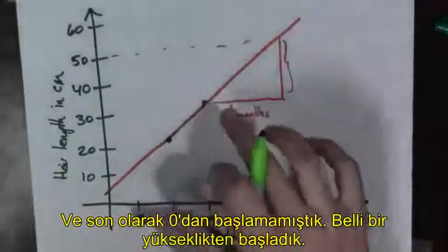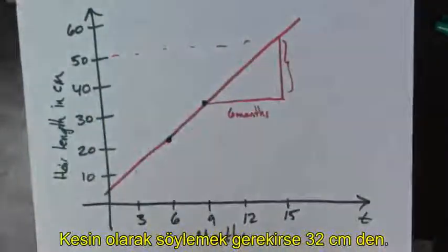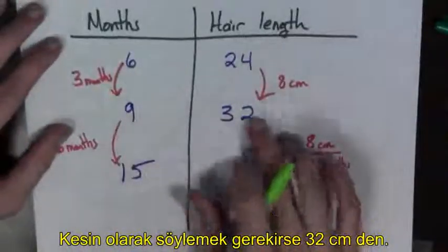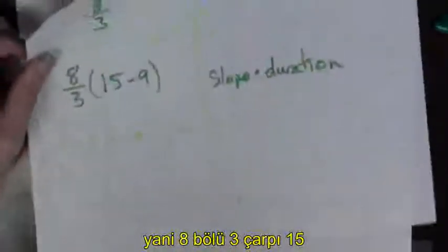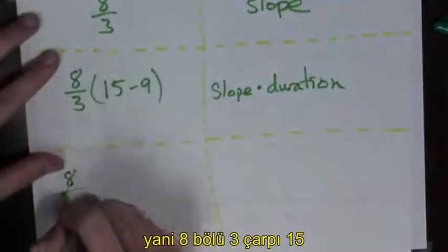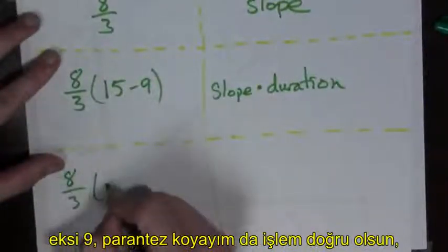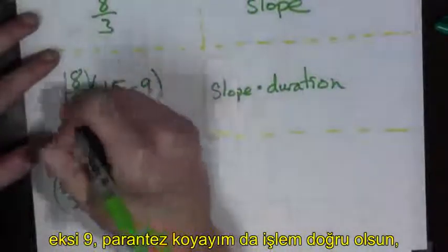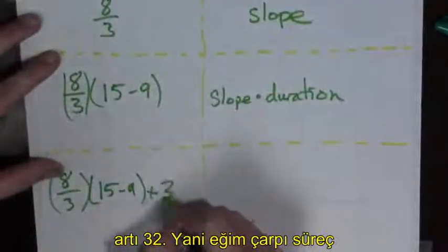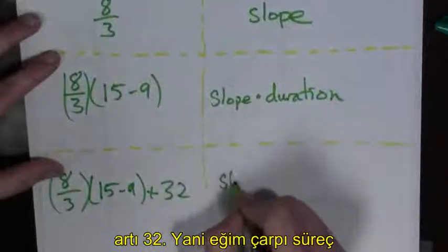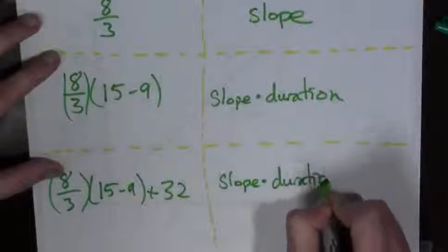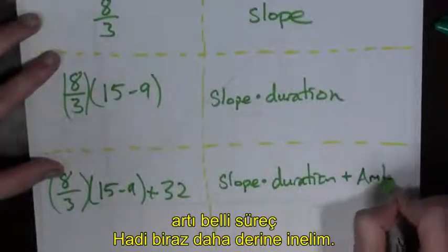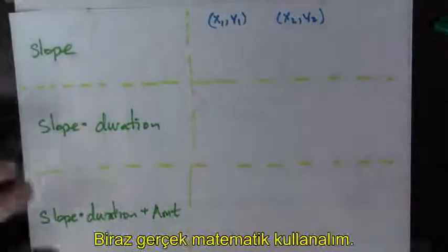And then finally, we didn't start at zero. We started with some height. We started actually at 32 centimeters. And then six months happened. And then we grew some more hair. So, we have eight over three times 15 minus nine, parentheses around this too, just to be safe, plus 32. And so, this is slope times duration plus some amount.